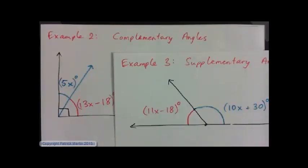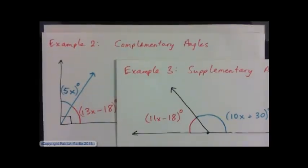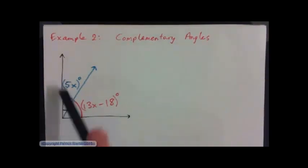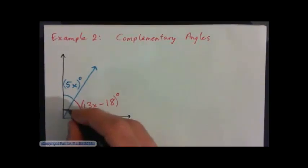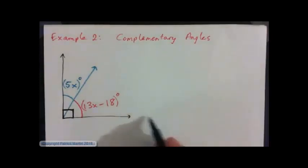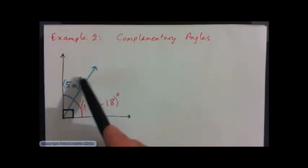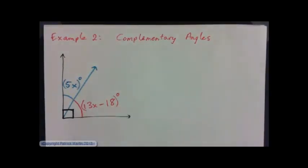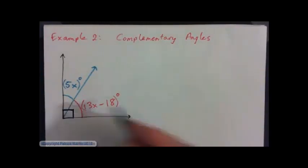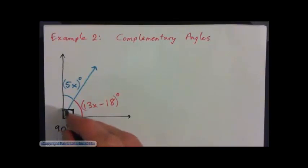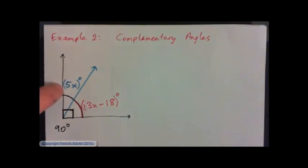Now let's look at examples 2 and 3: complementary and supplementary angles as applications of real-life equation solving. In example 2, this is a perfect 90 degree right angle corner, shown by the small square. The blue angle has a measure of 5x degrees, and the red angle has a measure of 13x minus 18 degrees. The whole angle together is 90 degrees — can you write an equation for this situation?